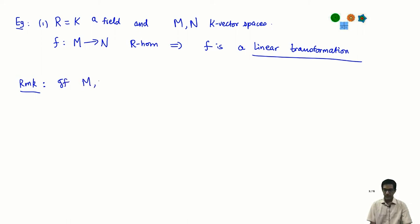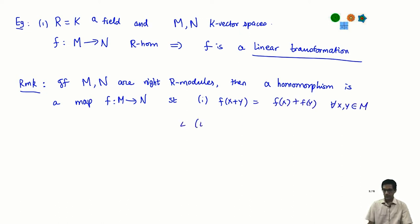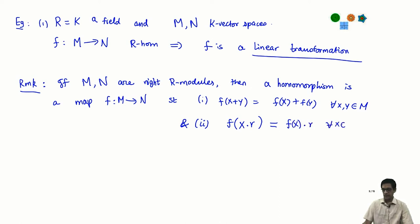If M and N are right R-modules, then a homomorphism is a map that preserves addition as before and also preserves the right scalar multiplication. Recalling the notational convention for right modules, the scalar multiplies on the right, so the condition is F(X · r) = F(X) · r. A map satisfying these conditions is called a homomorphism of right modules.